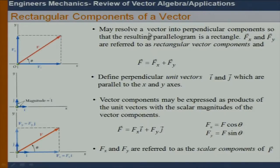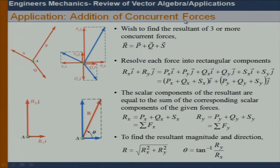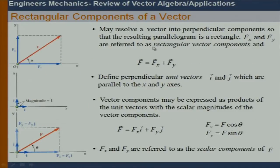The rectangular components of a vector can also be defined in rectangular coordinates. We have the force F with components Fx and Fy — these are just component-wise display — and we need a unit vector. So the force vector F will be written as FxI plus FyJ. When we have more than one force, say three forces, they can be added as per rectangular components.